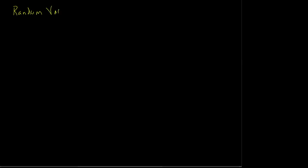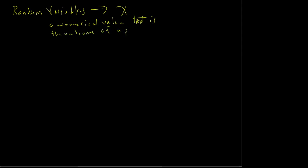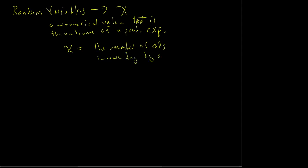To do this, we're going to talk about random variables. In most cases, I'm going to use the letter X. A random variable represents a numerical value that is the outcome of a probability experiment. For example, we can have the number of calls in one day by a sales rep — that's a random variable.